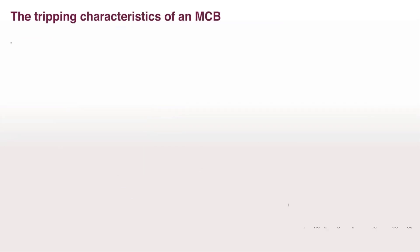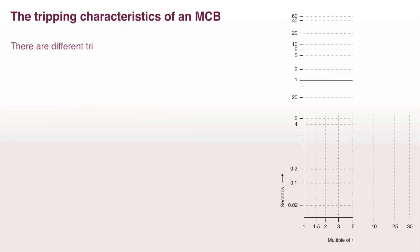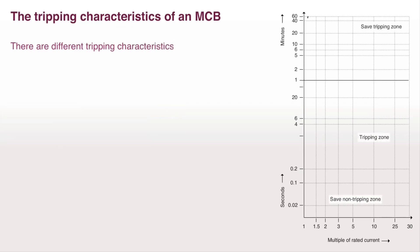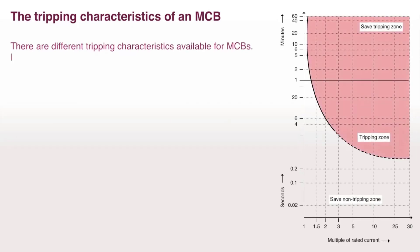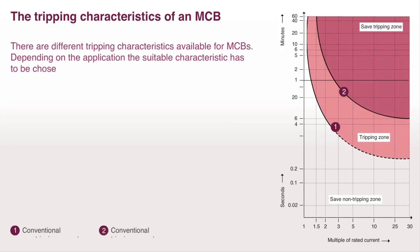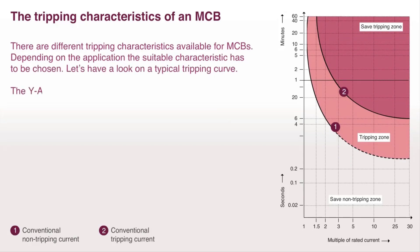The tripping characteristics of an MCB. There are different tripping characteristics available for MCBs. Depending on the application, the suitable characteristic has to be chosen. Let's have a look at a typical tripping curve. The y-axis represents the time, and the x-axis represents the multiples of rated current.